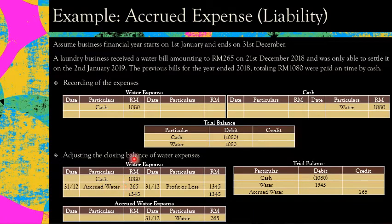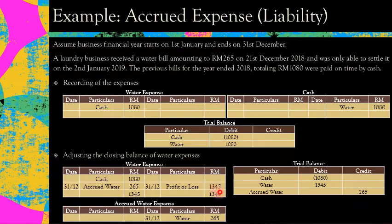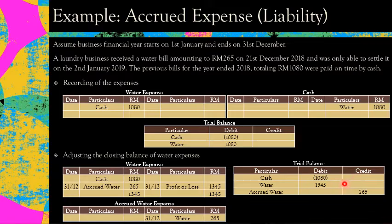Remember: accrued expense is a liability, so it should always be on the credit side. Credit accrued water expense and debit water expense. Your water expense increases — the value transferred to profit or loss becomes RM1,345. In your trial balance, add accrued water expense RM265 on the credit side, and your water expense increases to RM1,345. The trial balance would then be balanced.